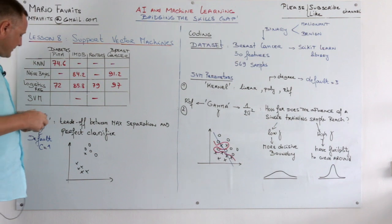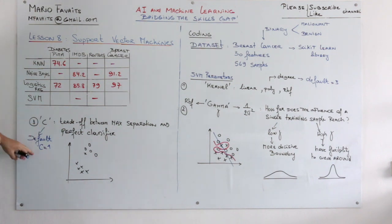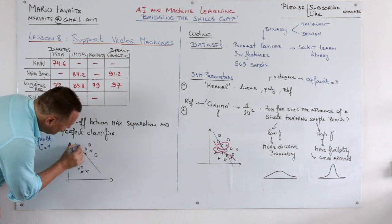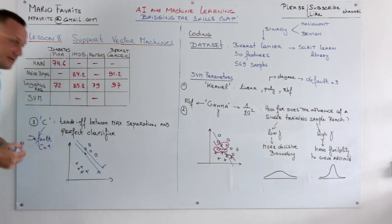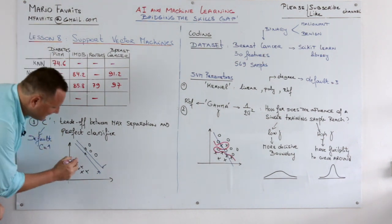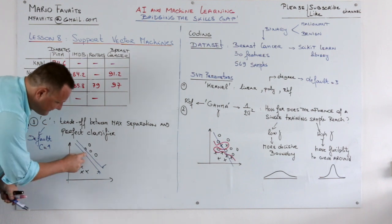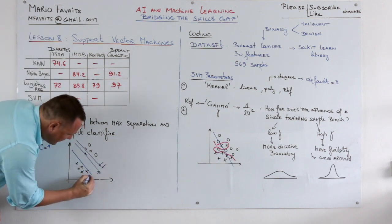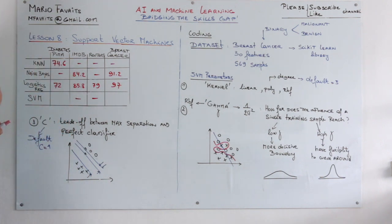A third parameter is the C parameter, and the default is that C is set to 1. So what does C do? Well, C trades off the maximum separation versus a perfect classifier. What do we mean by that? Well, in this case the perfect classifier would have this as a margin. But you see that if you ignore a little bit this point and consider it an outlier, well then your decision boundary or your gutter will be much larger. So that's the trade-off here. So is the margin soft or is the margin hard?